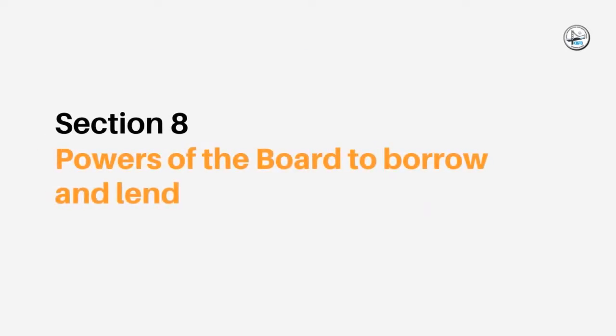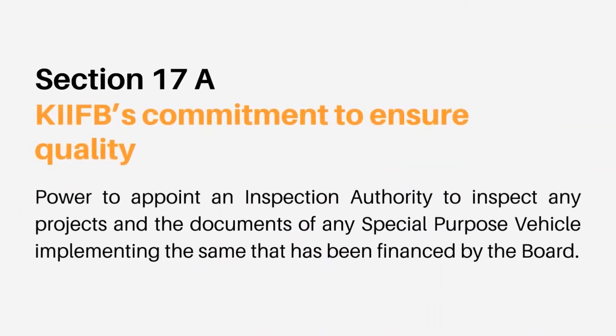Section 8 mentions the powers of the board to borrow and lend. As per section 17A, KIF-B has the power to appoint an inspection authority to inspect any projects and the documents of any special purpose vehicle implementing the same that has been financed by the board.